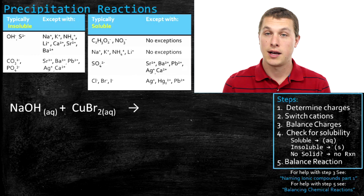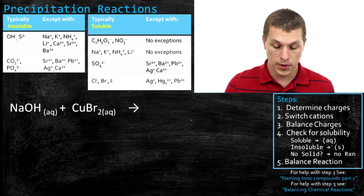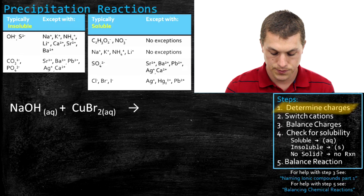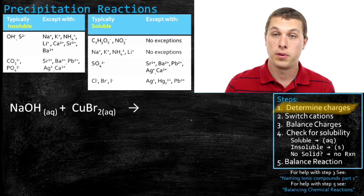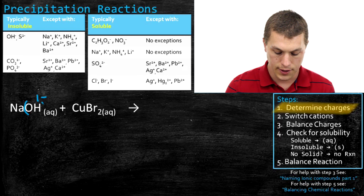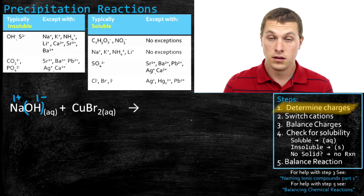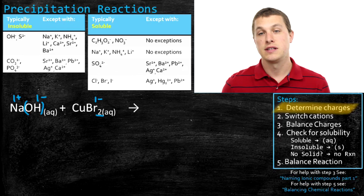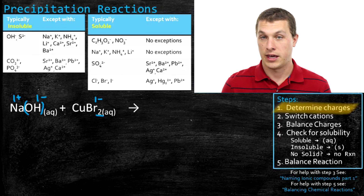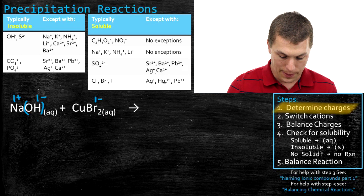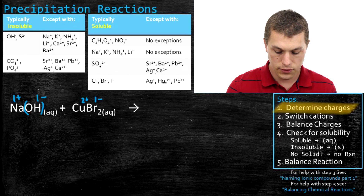In this case we have sodium hydroxide mixing with copper bromide, and we'll go through the same steps. First, determine the charges. Hydroxide is one minus — that's a polyatomic ion you need to know — and that means sodium is plus one. Bromine is minus one from the periodic table, and there are two of them, giving a total negative charge of negative two. That means copper must be plus two.